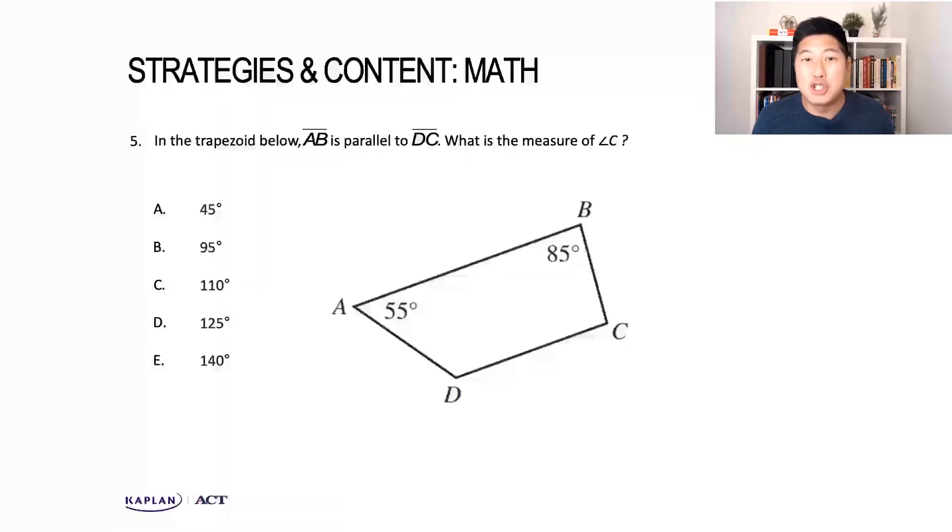Here we have another geometry question. If trapezoids aren't your jam, I hope you didn't panic, because actually we don't need to know that this is a trapezoid to solve this question. But what do we need to know? Always start with what they're looking for, which here is the measure of angle C. AB is parallel to DC, and angle C is created when transversal BC cuts through these two parallel lines.